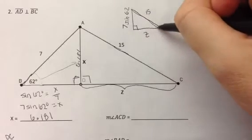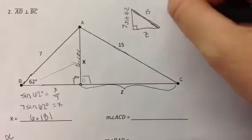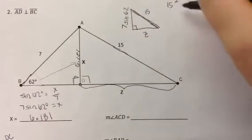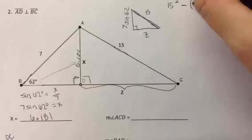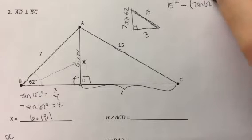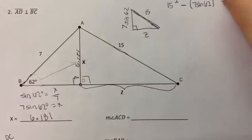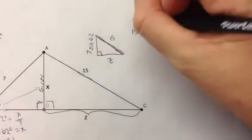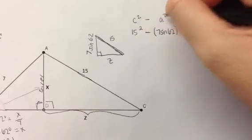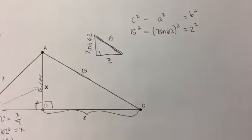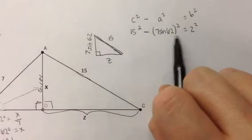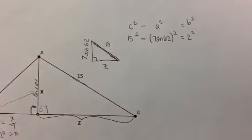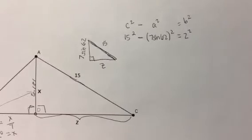Since this is your hypotenuse, it's the longest side, I want to subtract this squared leg from the hypotenuse squared. So, 15 squared minus, I'm going to write 7 sine 62 in parentheses and square that entire thing in my calculator. That's going to give us z squared. This is like using the Pythagorean theorem to say that C squared minus A squared equals B squared. The reason I'm using this and not 6.181 is that was an approximation and I just want to be as precise as possible.